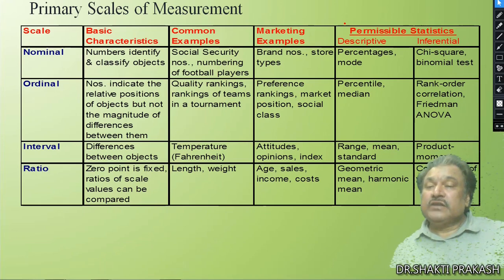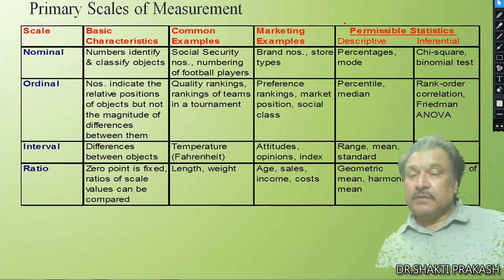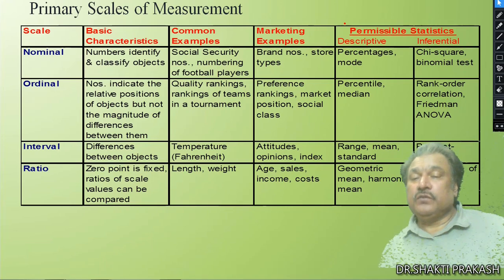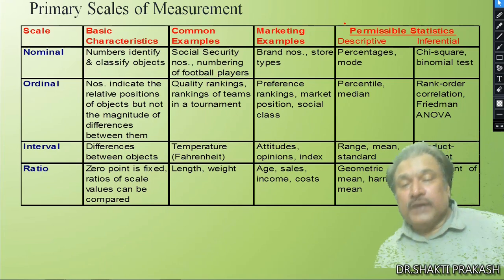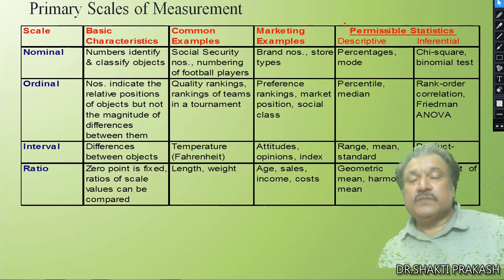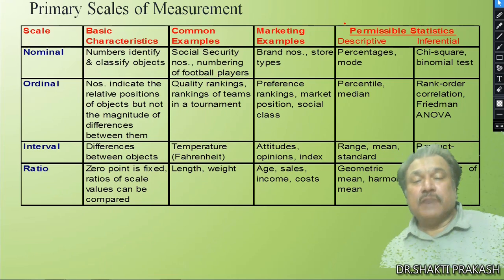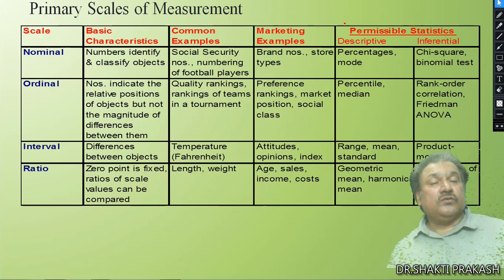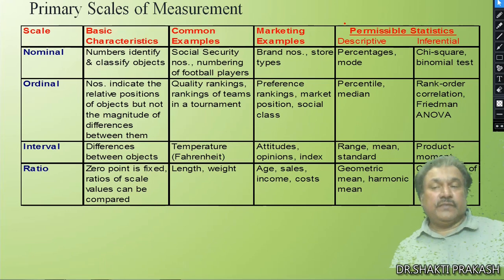Ordinal type of scale — basic characteristics: numbers indicate the relative positions of objects but not the magnitude of the difference between them. Examples: quality ranking, ranking items in a tournament. Marketing examples: market position, social class. Permissible statistics: percentile and median. Statistical tools: rank order correlation.